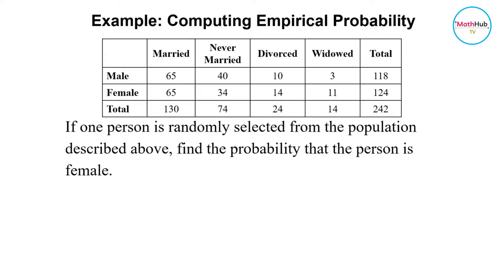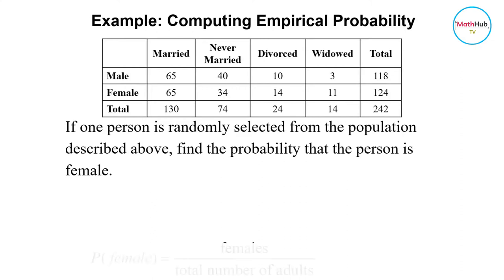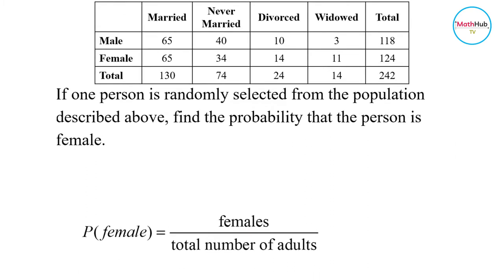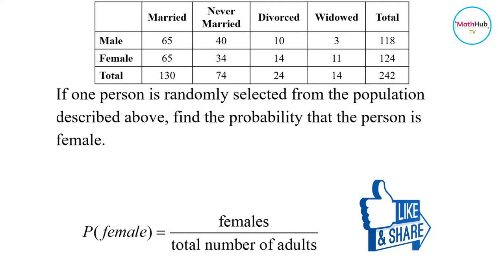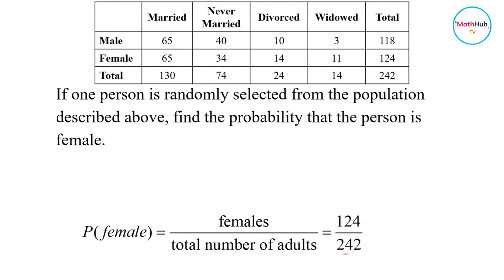To illustrate computing empirical probability, consider this table. If one person is randomly selected from the population described, find the probability that the person is female. Using the formula for empirical probability, we get the total number of females observed divided by the total number of adults in the survey. Based on the table, the total number of females is 124, while the total number of adults in the survey is 242. Therefore, the probability that the person is female is 124 divided by 242, which is approximately equal to 0.51.